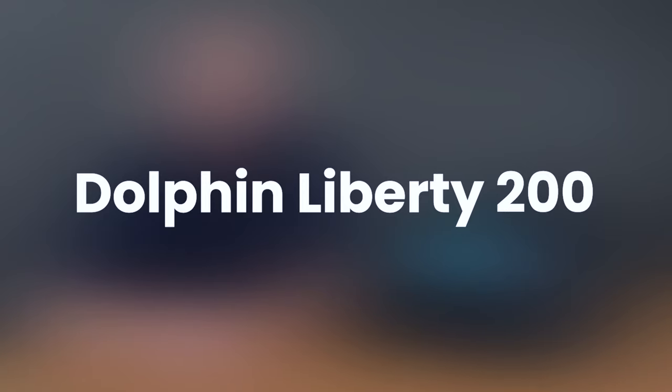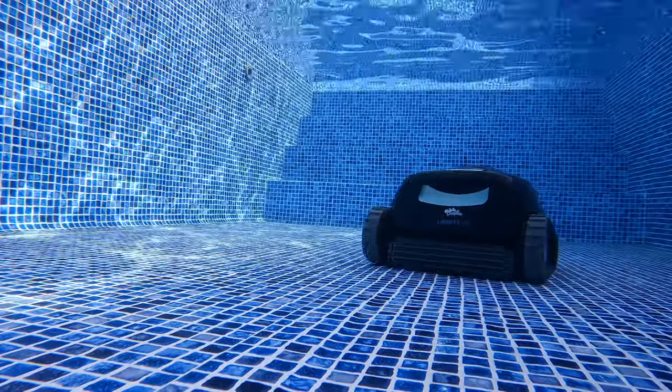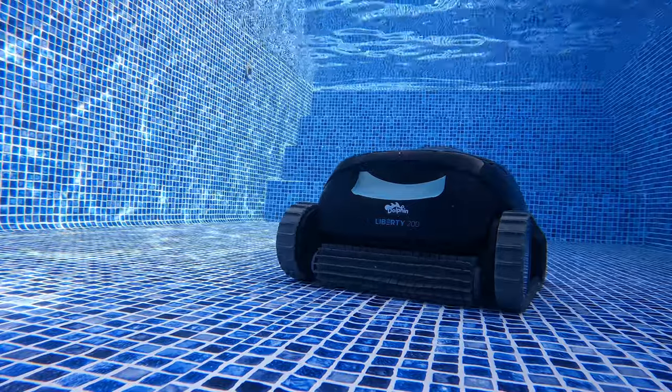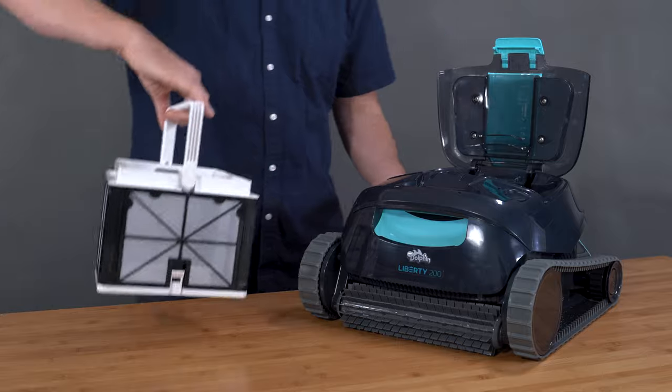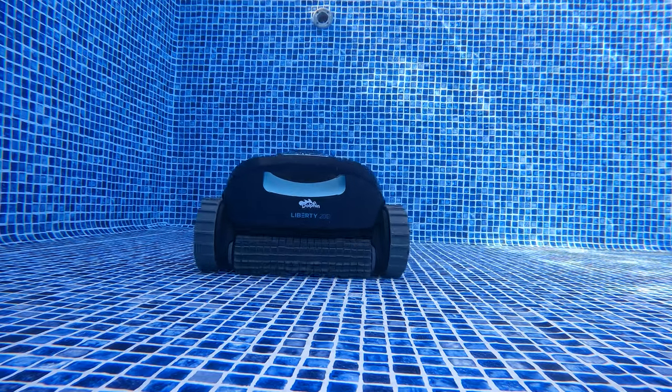Lastly, the new kid on the block: the Cordless Dolphin Liberty 200. Compared to other models, the Liberty is one of Dolphin's only cordless models. It has a two-year warranty, a top-loading filter basket, and pool and floor coverage.